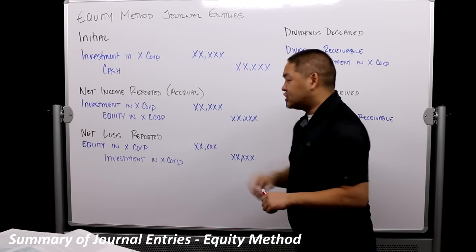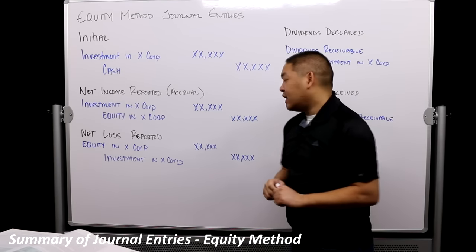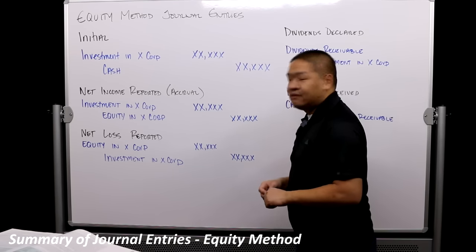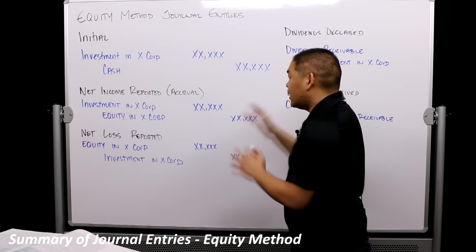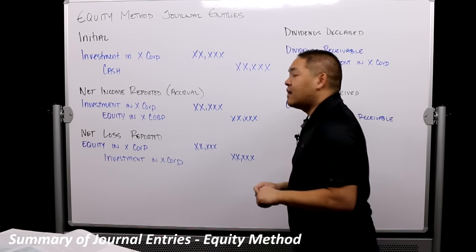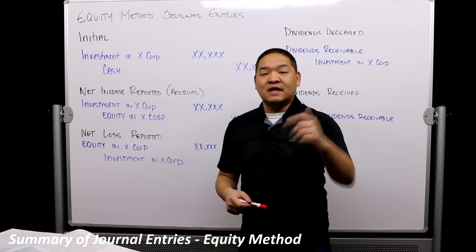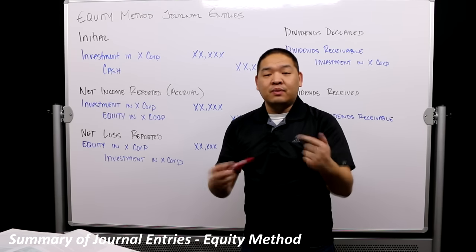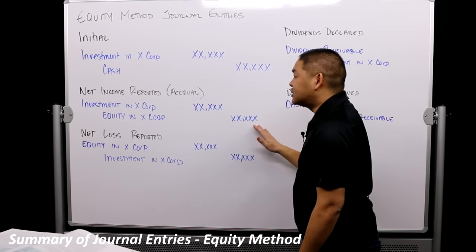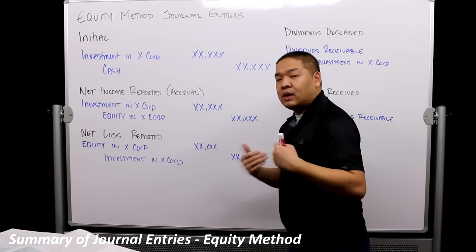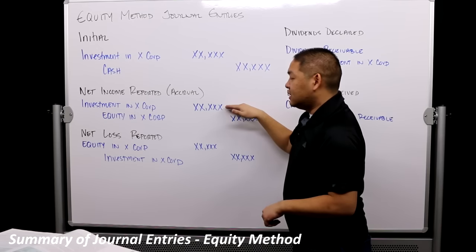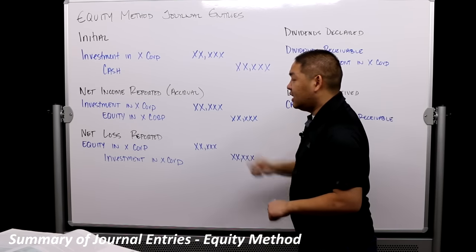The opposite is true if a net loss is recorded — in that case we would debit Equity and credit Investment. All we need to know is how much net income or net loss the investee had during the period, and then we book the entry accordingly. When they're reporting net income, we report our share right away; and similarly for a net loss.